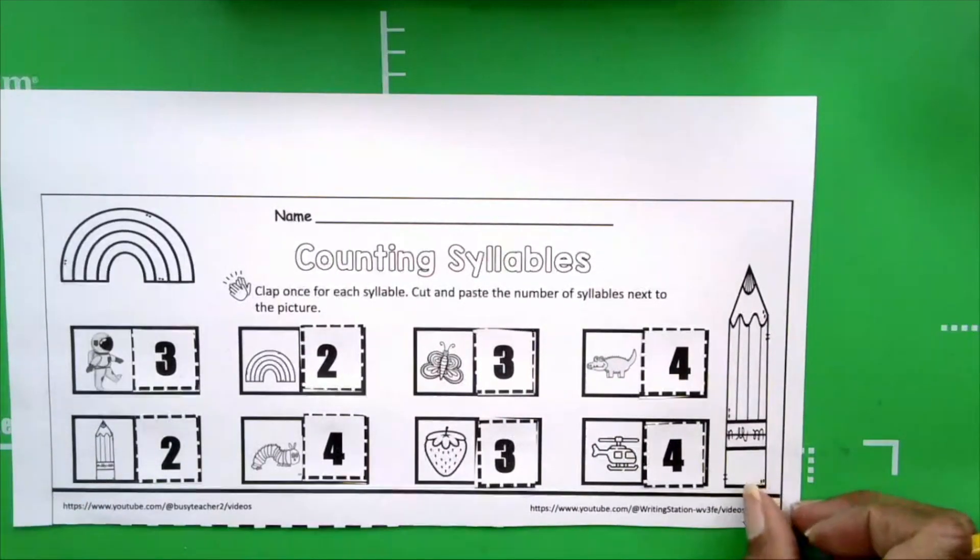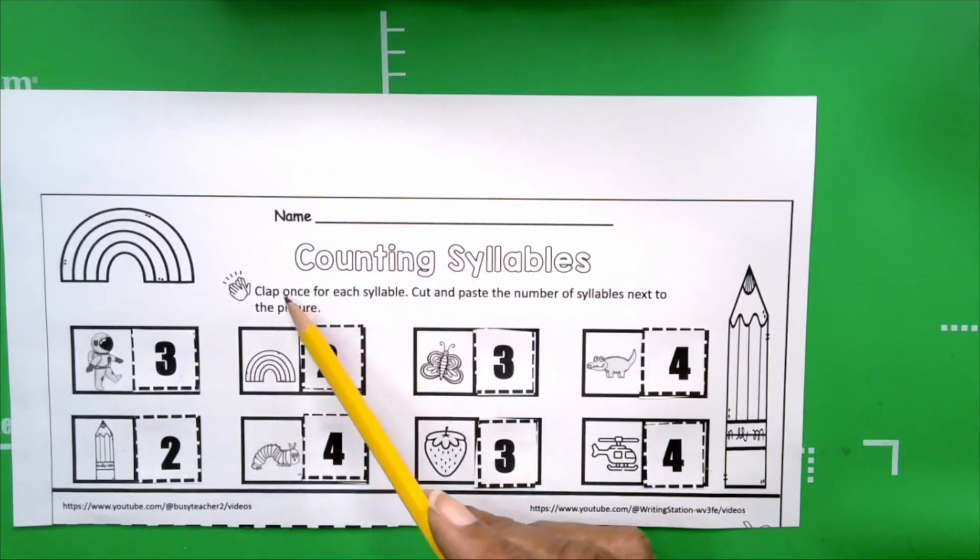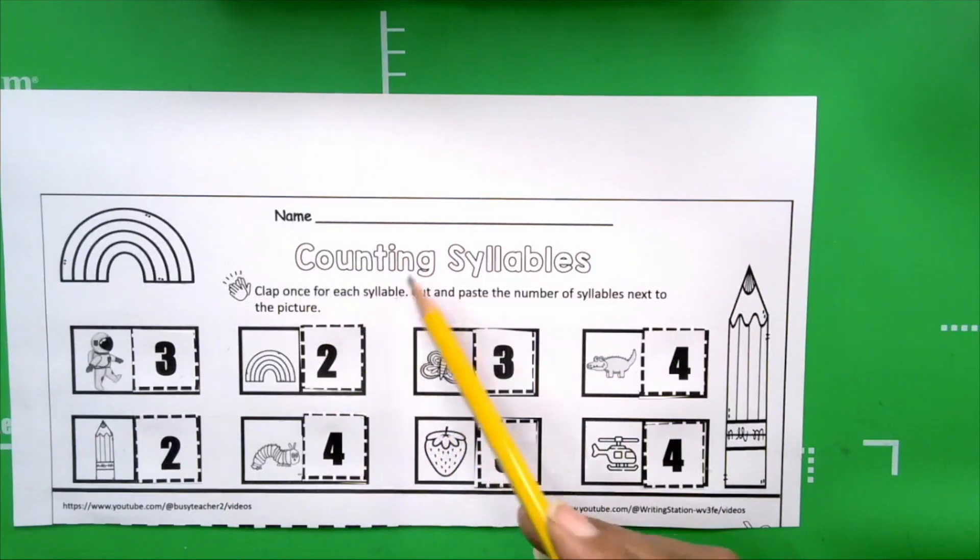Before we start coloring our pictures, let's just review what we've done so far. We named the picture. Then we clapped once for each syllable. We cut and pasted the number of syllables next to the picture. And now we are going to color our pictures. I'm going to fast forward the video and I'll be right back.